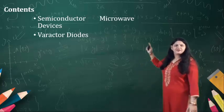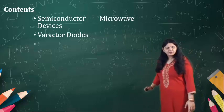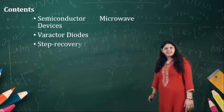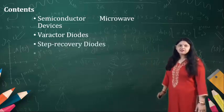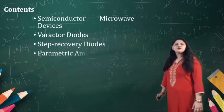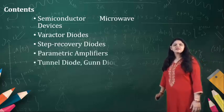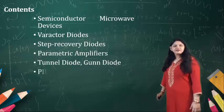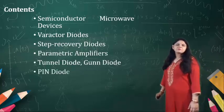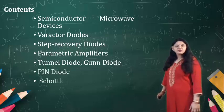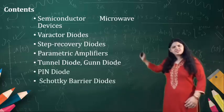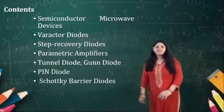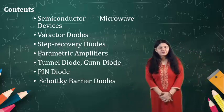Now these are the various diodes: the varactor diode, step recovery diode, parametric amplifier, tunnel diode, gun diode, PIN diode, and Schottky barrier diode. So these are the diodes of the previous category.